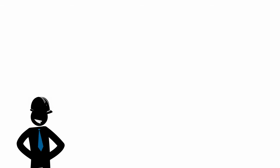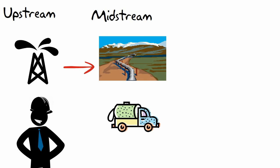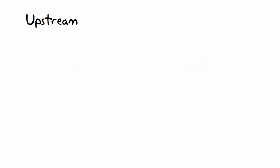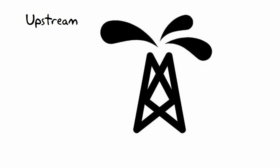The oil and gas industry usually divides the process of getting the stuff out of the ground and to the consumer into three sections: upstream, midstream, and downstream. Sometimes midstream is considered part of downstream. Upstream is usually the place where the oil or gas is found — exploration and drilling, or exploration and production in the industry jargon.